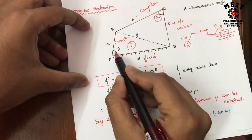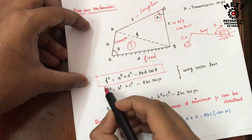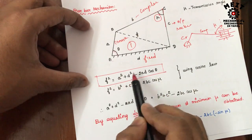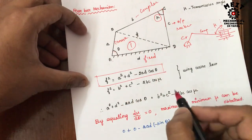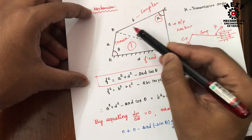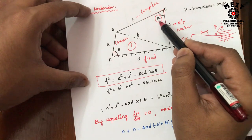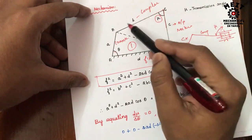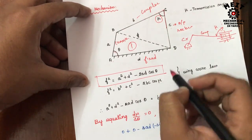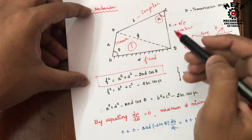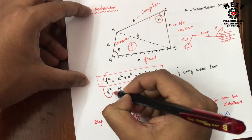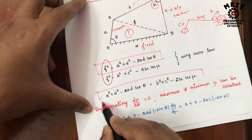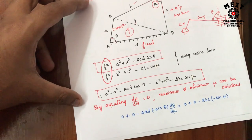Applying the cosine law to triangle ABD: the angle is theta and the opposite side is f, so f squared equals a squared plus d squared minus 2ad cos theta. For triangle BCD: the angle is mu and the opposite side is f, so f squared equals b squared plus c squared minus 2bc cos mu. Since both equal f squared, we equate them.